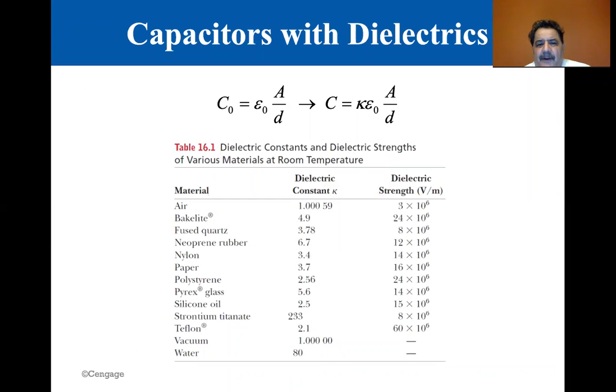Here are some kappas, some dielectric constants for the different materials, the dielectric constant, and also the dielectric strength, volts per meter. So C is equal to epsilon zero, area over the distance. Well, for that C zero, that's with no dielectric. If you put a dielectric, C equals kappa epsilon zero times area divided by distance. And you can see air, the dielectric constant is about one. Bakelite is 4.9, fused quartz 3.78, neoprene rubber 6.7. It just increases the capacitance by this much. Paper 3.7, polystyrene 2.56. Pyrex glass, 5.6.